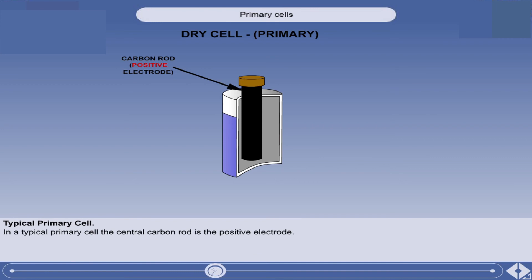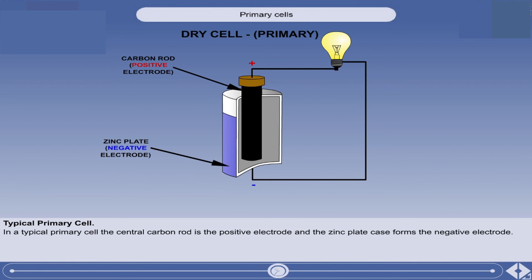The central carbon rod is the positive electrode, and the zinc plate case forms the negative electrode.